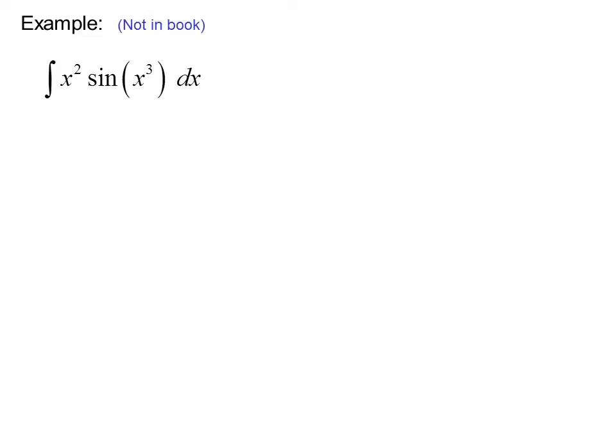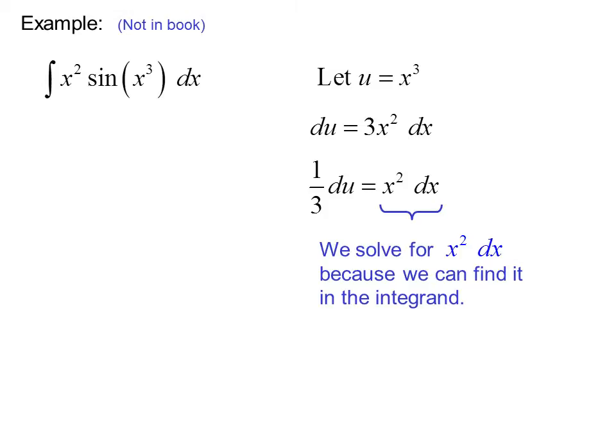Here's another example. The integral of x squared sine x cubed dx. Let u equal x cubed. So du equals 3x squared dx. I don't have 3x squared dx in the original problem. But I do have an x squared dx. So I can divide by 3 and get 1 third du equals x squared dx. We solve for x squared dx because we can find it in the integrand.